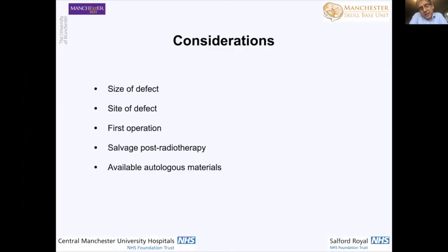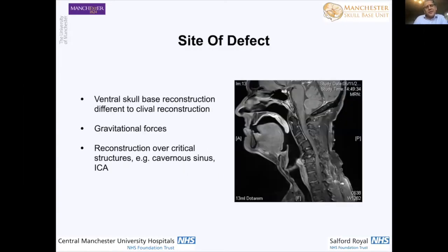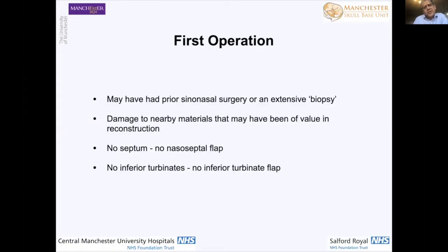Radiotherapy — post-radiotherapy and salvage surgery causes its own problems in terms of reconstruction. Also consider what autologous materials are available and what's been used in previous surgical interventions. As you move from anterior to posterior, you can see how the direction of the skull base changes. What's important in the clival area is reconstruction over critical structures such as the cavernous sinus and the internal carotid arteries, making sure those critical structures are covered.